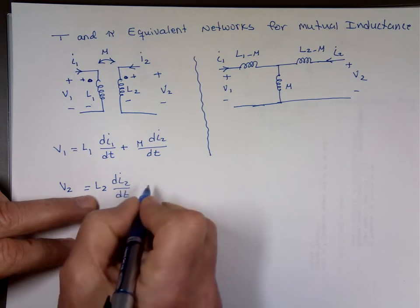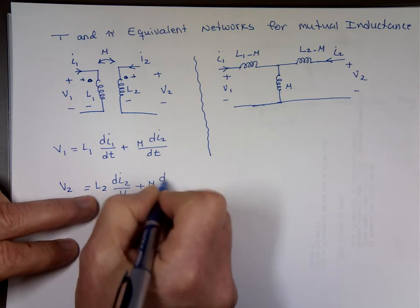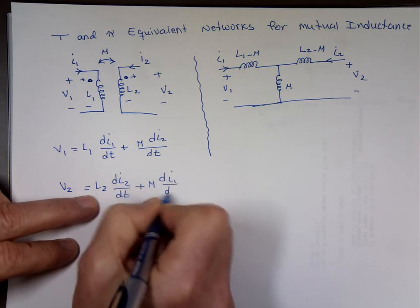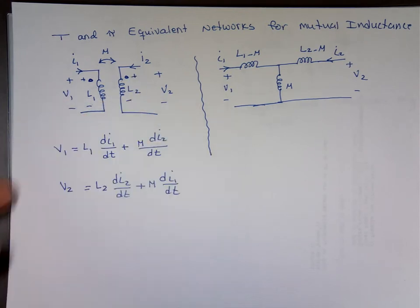L2 di2 dt plus the mutual inductance di1 dt. Again, why is it plus? Because this current comes in and marks it plus to minus that matches that polarity.